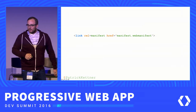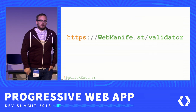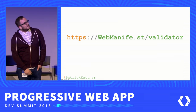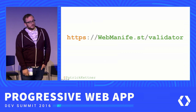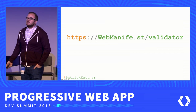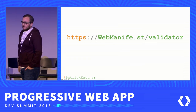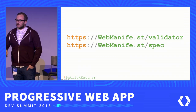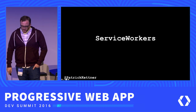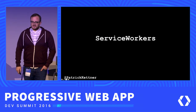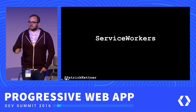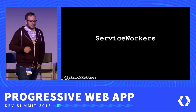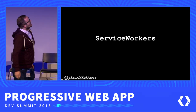Webmanifest also has cool short URLs. Slash validator gives you Google's web app manifest validation tool. Slash spec gives you a hot link to the specification. Moving on — service workers. I'm not sure if anyone's ever heard of this, since Google doesn't talk about it that much, but it is actually a really cool part of progressive web apps.